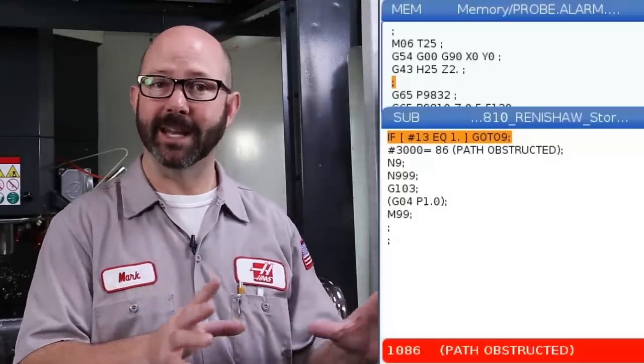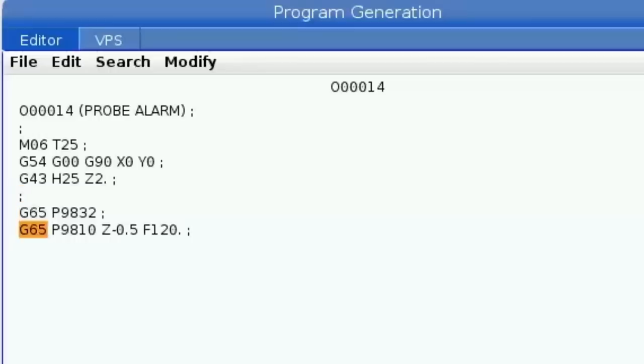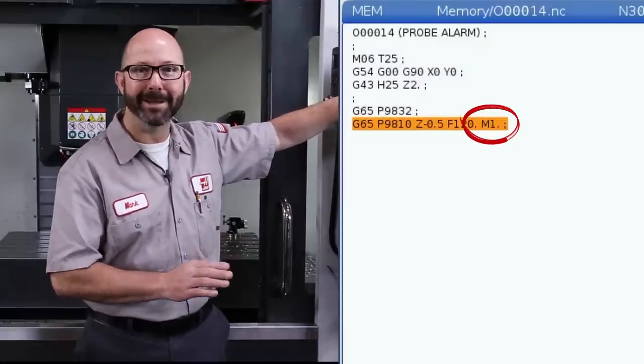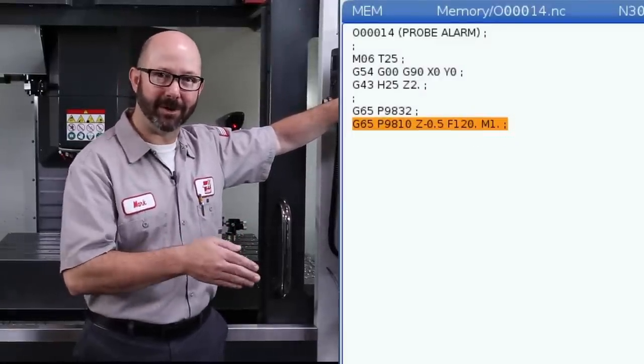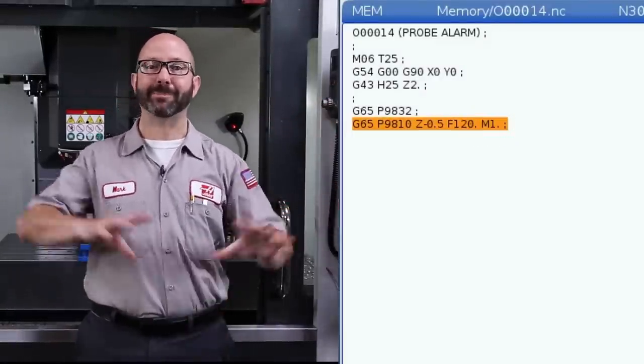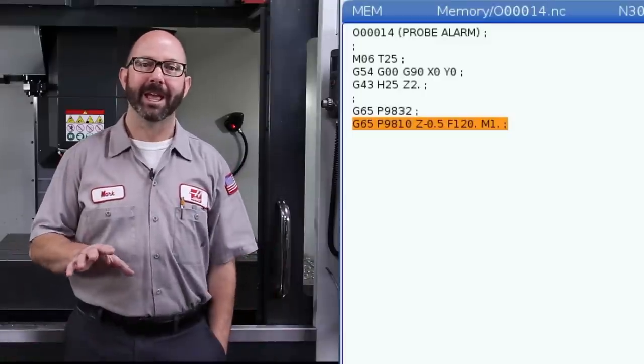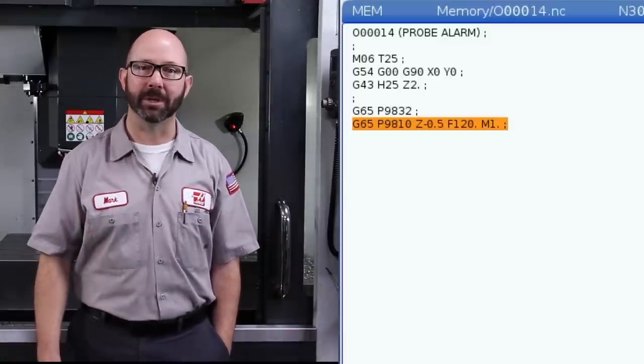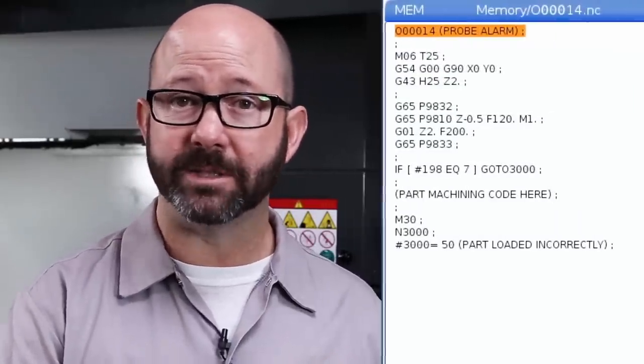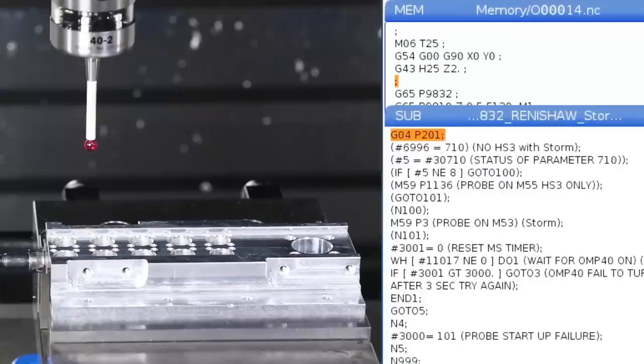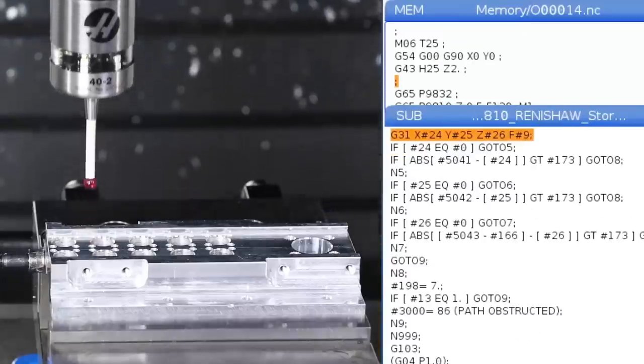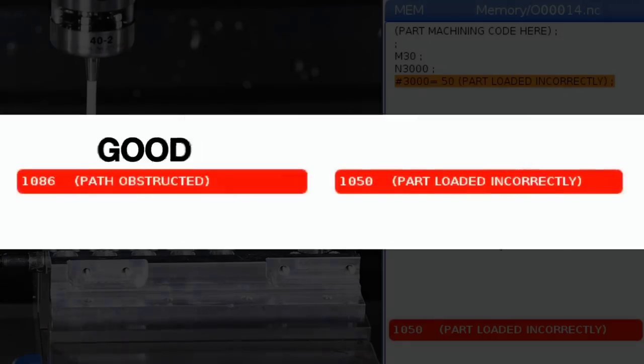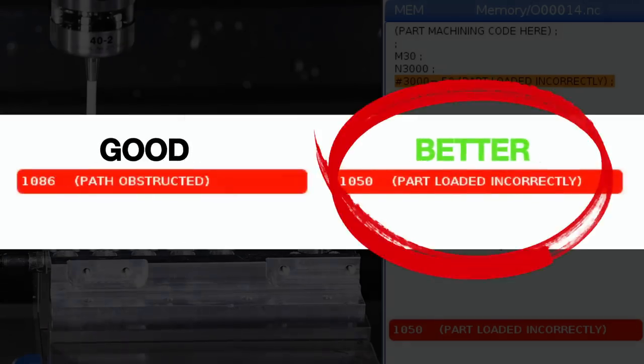But we're going to use this 9810 code a little differently today. If we add an M1.0 to this line, not an M01, but an M1.0, the 9810 transforms into something magical, just incredible. It becomes a really powerful programming tool to detect part orientation. Two important things happen when we run this code with an M1.0. Number one, the machine will no longer alarm out when that probe makes contact. That 1086 alarm was good, but it's not descriptive enough for our application.